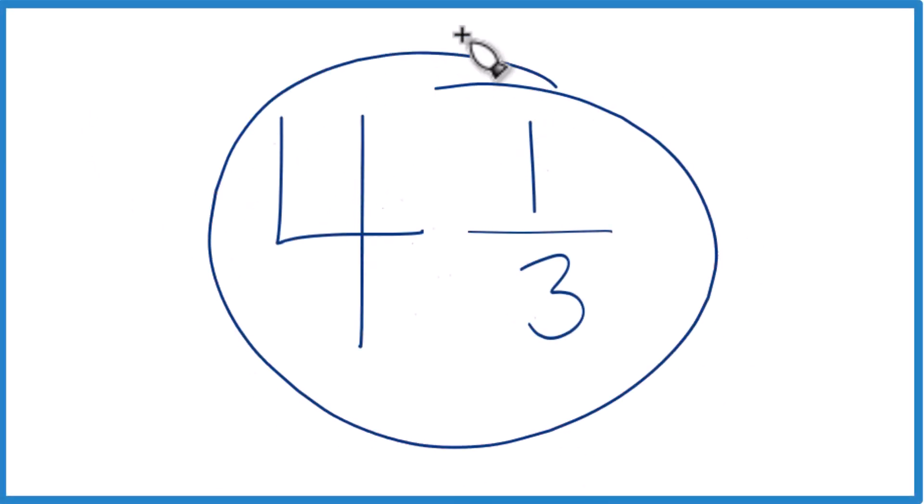Let's write 4 and 1 third, the mixed number 4 and 1 third, as an improper fraction.